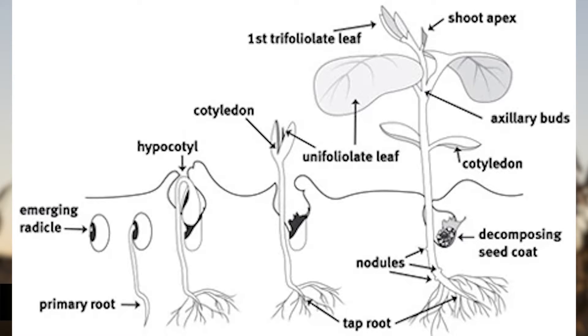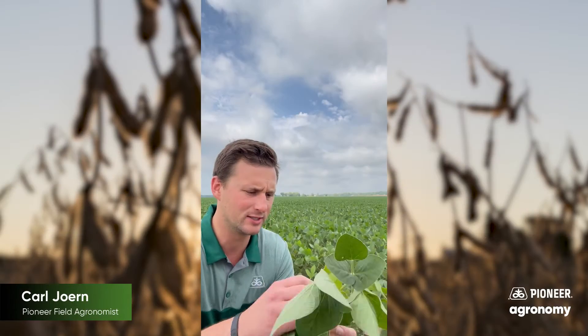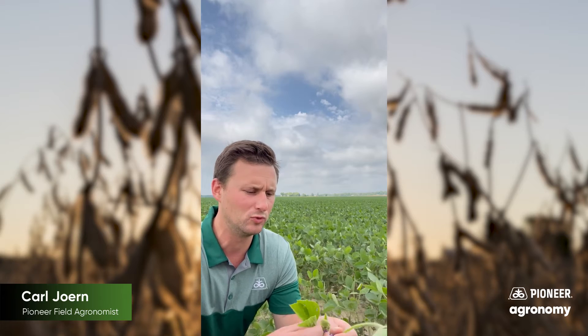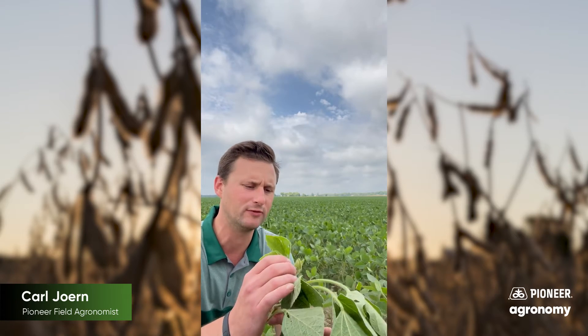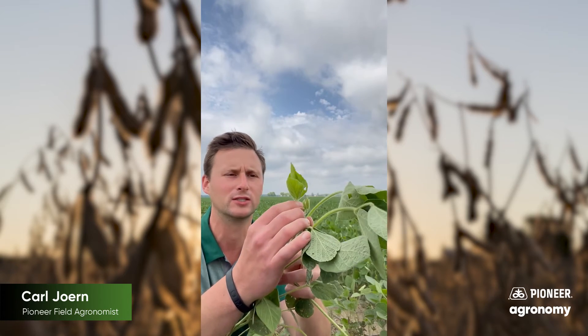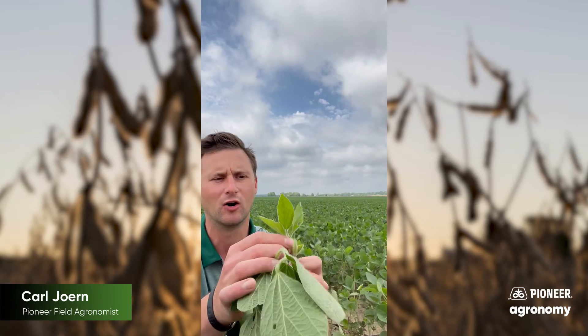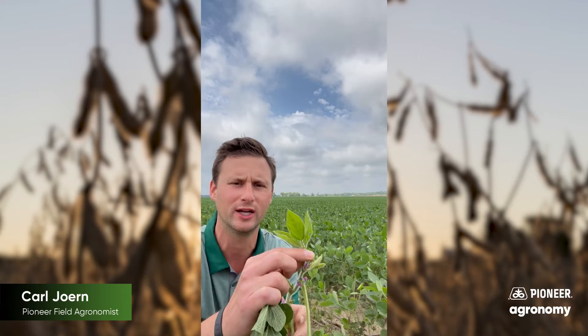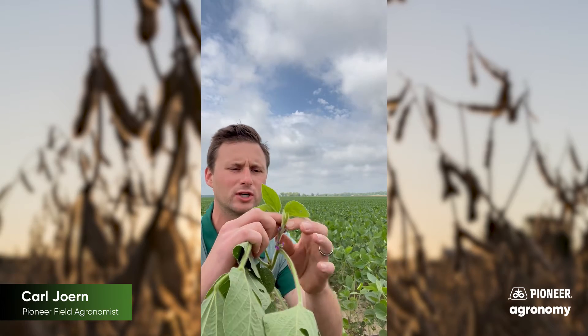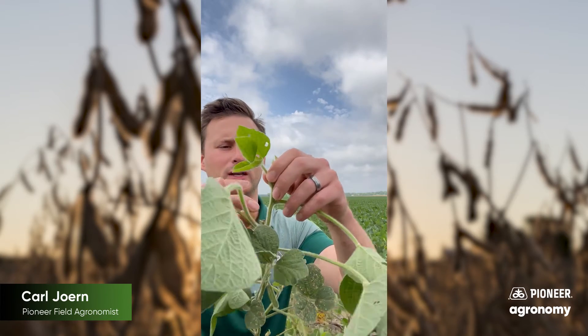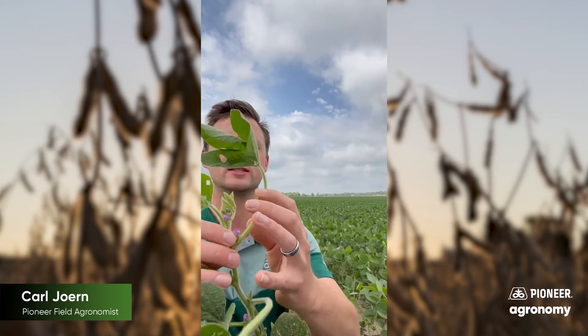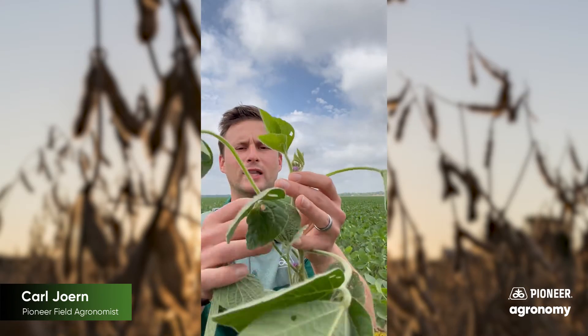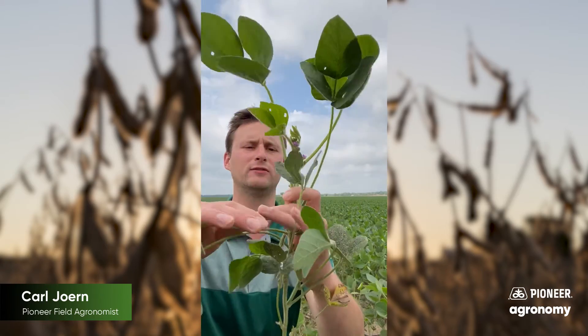How one goes about growth staging a soybean plant in the R stages — the reproductive stages — is you look for the most recent mature leaf on the plant. That's the trifoliate that's completely unfurled and the leaf margins are no longer touching. On a breezy afternoon here, this would be our most recent mature leaf — he's number one. We count down from there: leaf number two, leaf number three, leaf number four.